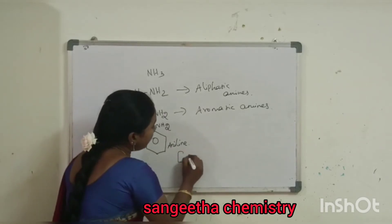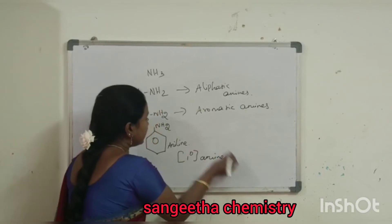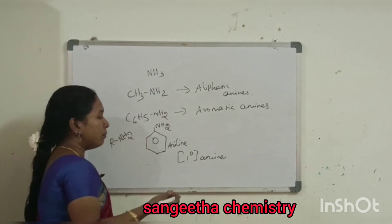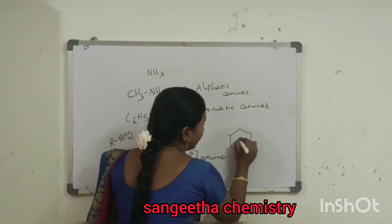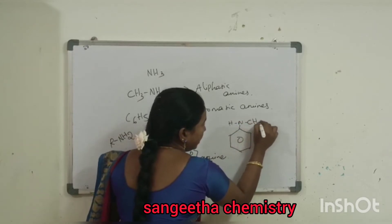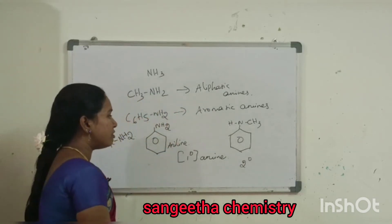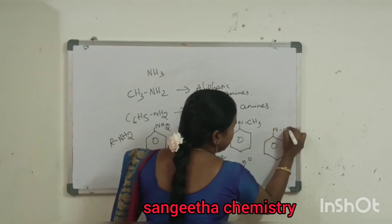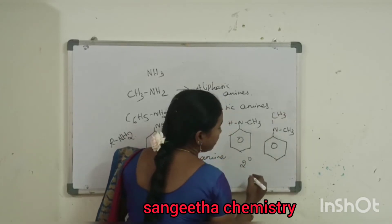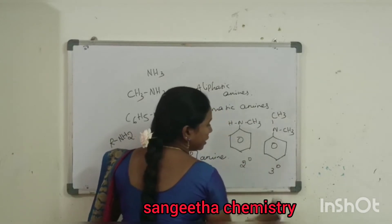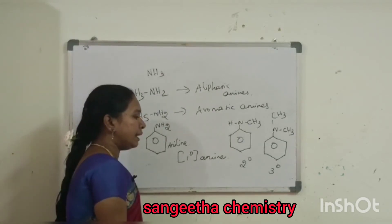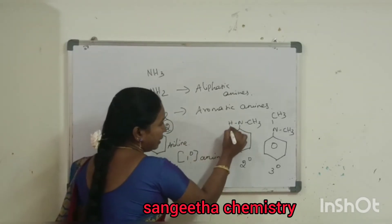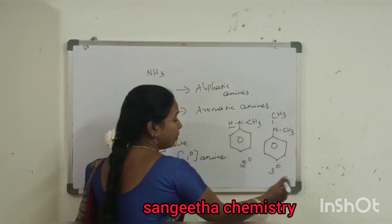Aniline is also a primary amine. N-methyl-aniline is a secondary amine, and N,N-dimethyl-aniline is a tertiary amine. In terms of structure: if nitrogen has NH2, it is a primary amine. With one substituent replacing a hydrogen, it is secondary. With two substituents and no free hydrogen, it is tertiary.